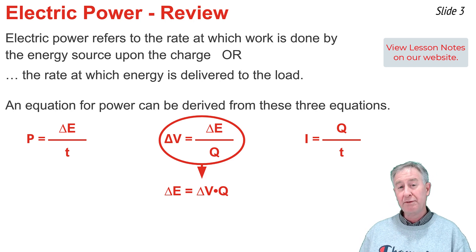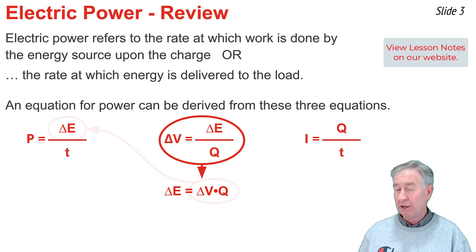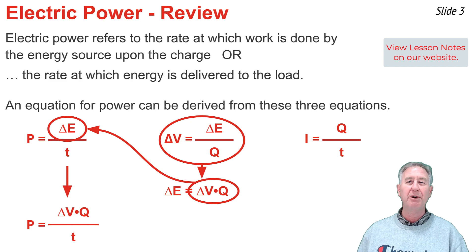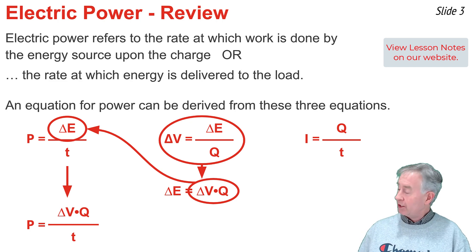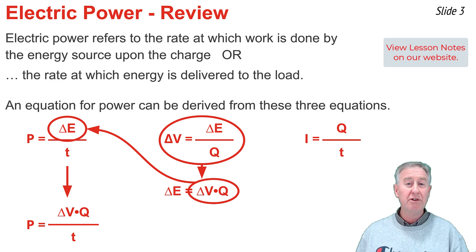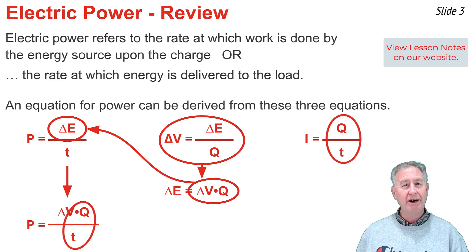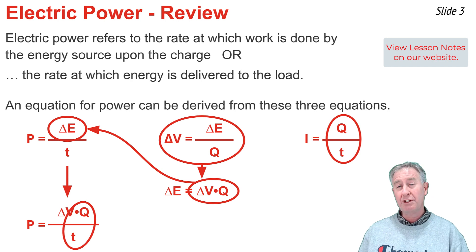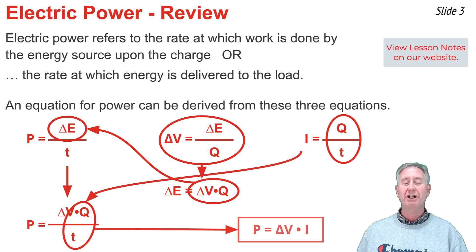I'm going to take this expression for delta E and substitute it into the numerator of the first equation. That first equation becomes P equal delta V times Q all over T. Now I notice in this equation that there's a Q divided by a T. Q divided by T is simply current, so I'm going to take I, the current, and substitute it in for Q over T. The first equation becomes P equal delta V times I.